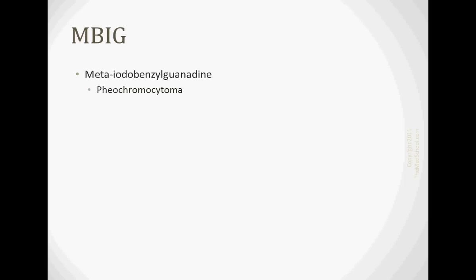So the MIBG, the meta-iodo-benzylguanidine test, is going to be a nuclear test that helps you to identify adrenal tissue. So you can see pheochromocytoma. You can also just pull blood out of the adrenal veins and compare the levels of hormones from the left side to the right side. So if you've got a high amount of aldosterone or cortisol or any other hormone produced by the adrenal glands on one side versus the other, then that's a good indication of where your problem is.